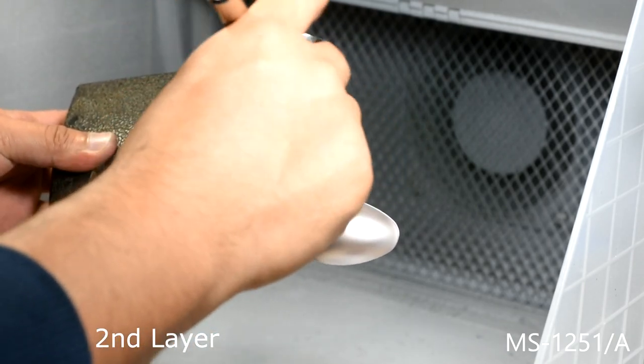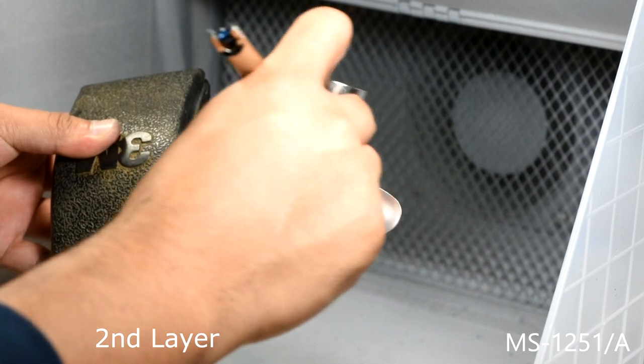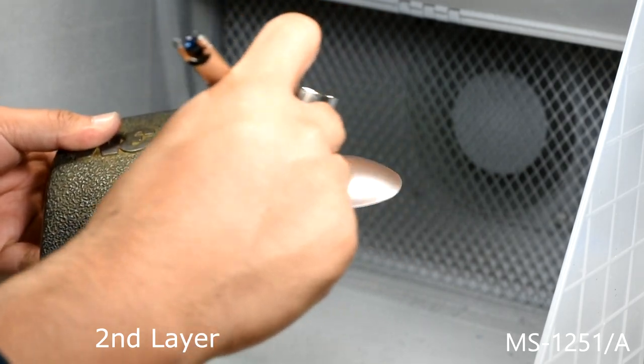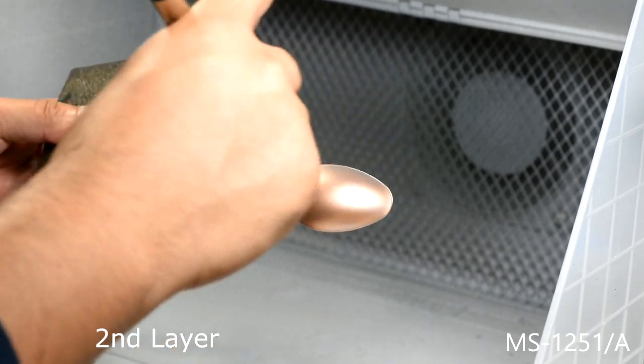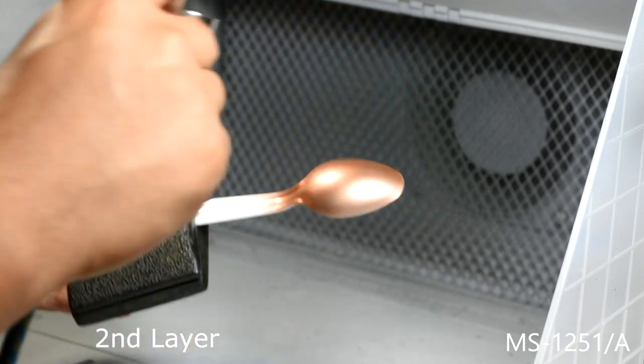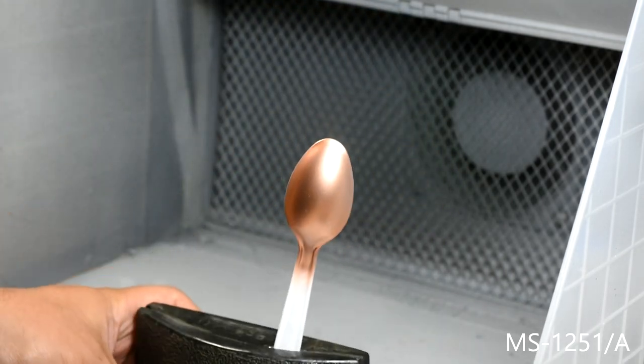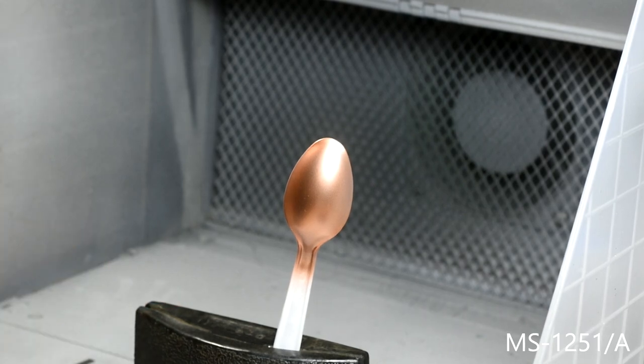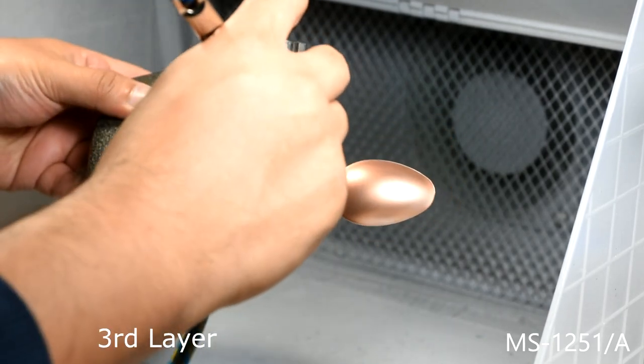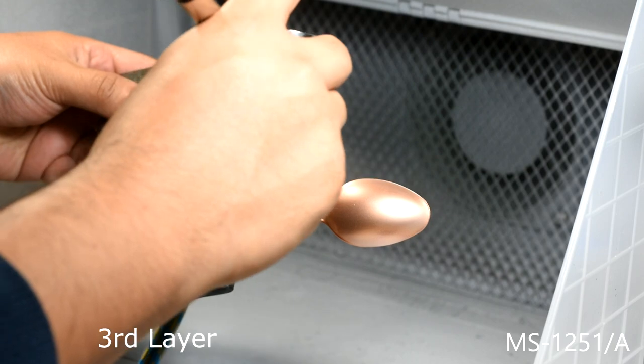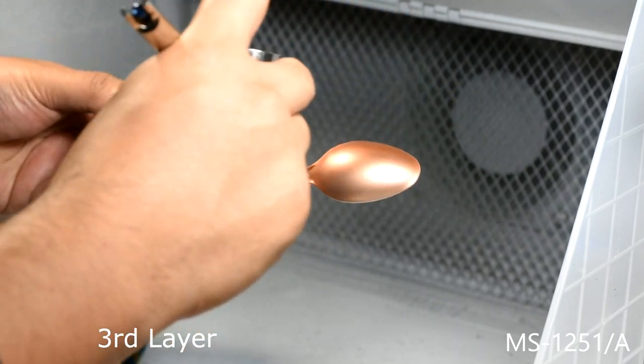I chose to spray the clear red to showcase how clear coats change in color depending on how many layers of paint are applied. In the first few layers this Tamiya clear red lays down more like a clear orange color. When applying fewer layers of the Tamiya clear colors, the colors will be lighter but will have a much more metallic effect to them.